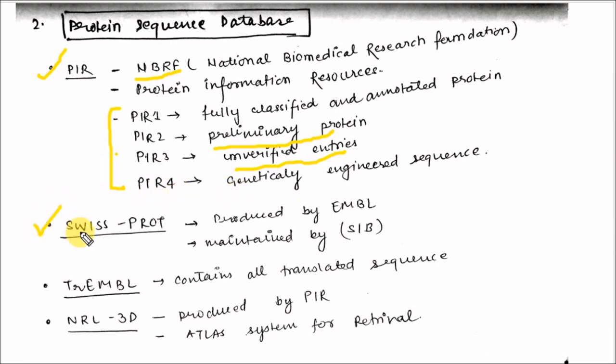The second primary protein database is SwissProt, produced by EMBL. The third is TREMBL, present at EMBL. The fourth is NRL-3D, produced by PIR.